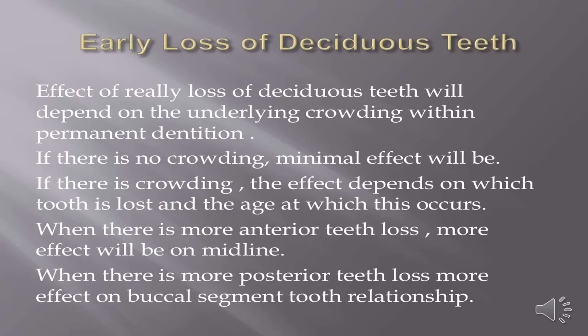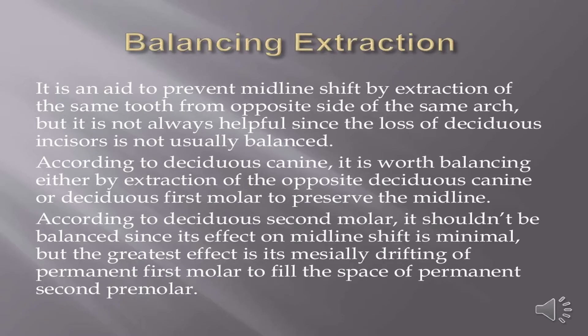The effect of early loss of deciduous teeth will depend on the underlying crowding within the permanent dentition. If there is no crowding, the effect will be minimal. If there is crowding, the effect depends on which tooth is lost and the age at which it occurs. Anterior tooth loss has more effect on the midline, while posterior tooth loss has more effect on the buccal segment relationship. Balancing extraction of the same tooth from the opposite side of the arch can help prevent midline shift, but it is not always helpful — loss of deciduous incisors is not usually balanced.